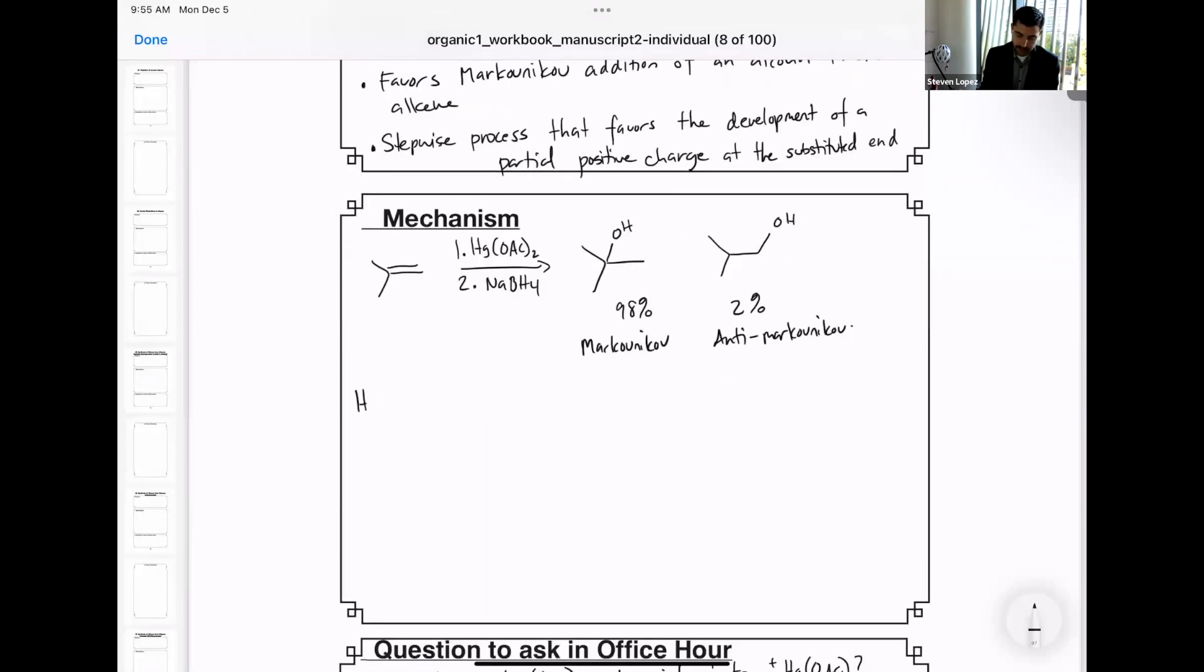First, mercuric acetate has a natural equilibrium towards the dissociated mercuric acetate and acetate anion. If you're not sure, the acetate anion looks like this. It's just the conjugate base of acetic acid. So then this now Lewis acid will react with the Lewis base, which is the alkene.